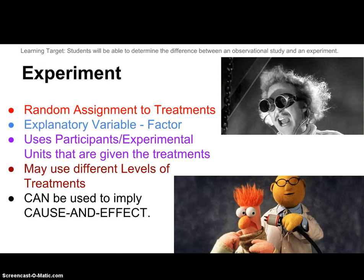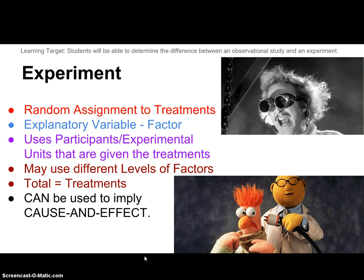So what about an experiment? You don't have to be Dr. Frankenstein to do an experiment, but there are some things you need to be able to do. The first thing is you need to randomize your participants into treatment groups — so you're going to have random assignment into treatments. Those treatments are some sort of thing you're going to do to, or have your participants participate in. We call them participants, or experimental units if you're not using people. You're giving them those treatments, and we can have several different treatments in one experiment.